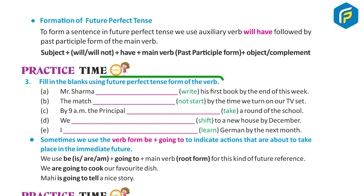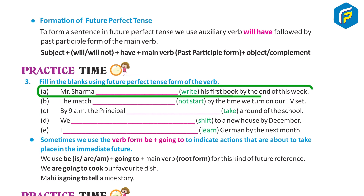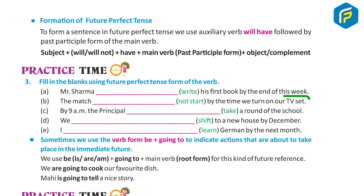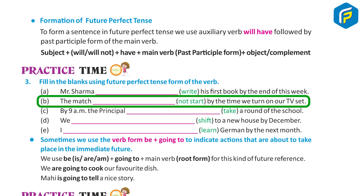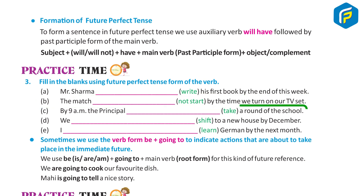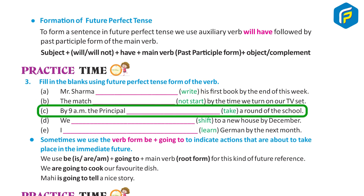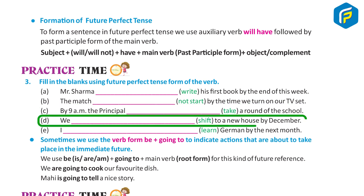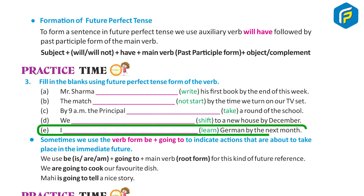Practice Time 3: Fill in the blanks using the future perfect tense form of the verb. A. Mr. Sharma will have written his first book by the end of this week. B. The match will not have started by the time we turn on our TV set. C. By 9 am, the principal will have taken a round of the school. D. We will have shifted to a new house by December. E. I will have learned German by next month.